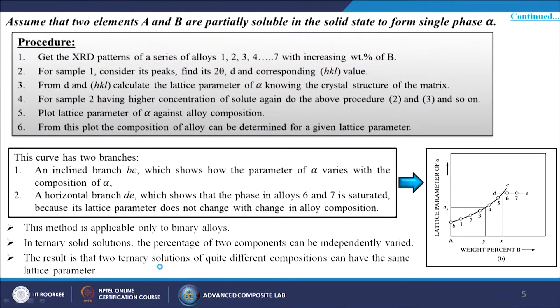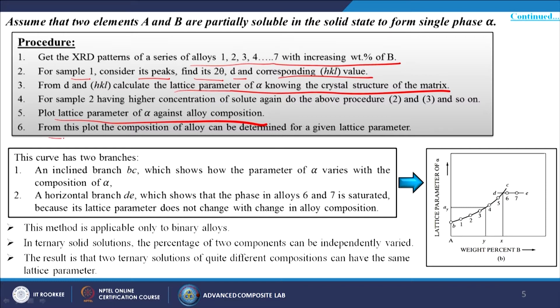Through an example: assume two elements A and B are partially soluble in the solid state to form a single phase alpha. The procedure is to get the XRD patterns of a series of alloys 1 through 7 with increasing weight percent of B. For sample one, find its peaks, 2-theta, D, and corresponding HKL values. From D and HKL, calculate the lattice parameter of alpha knowing the crystal structure of the matrix. Follow the same procedure for sample two, then plot the lattice parameter of alpha against alloy composition. From this plot, the composition of the alloy can be determined for a given lattice parameter.